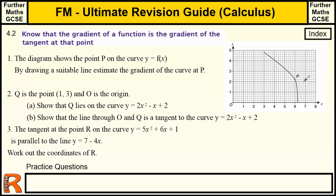So if we've got a point on a curve, the tangent is the line that just touches that point at one point only. And if we can draw that perfectly, then the gradient of that line will be exactly the same as the value of the gradient function at that point.